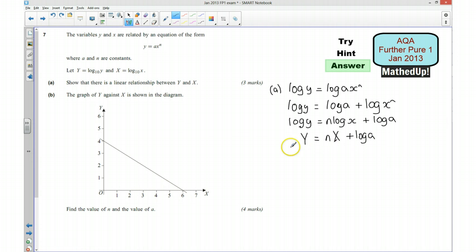So we've now got this as a linear relationship, because we've got it in the form Y equals MX plus C, where M is N, and C is going to be log A. So, moving on to part B.